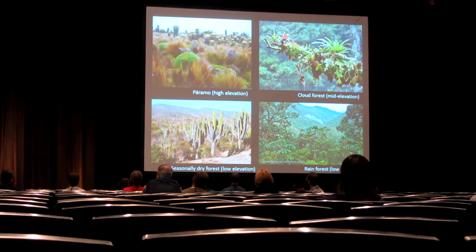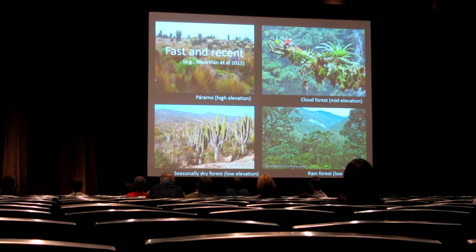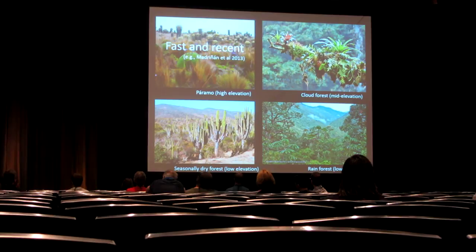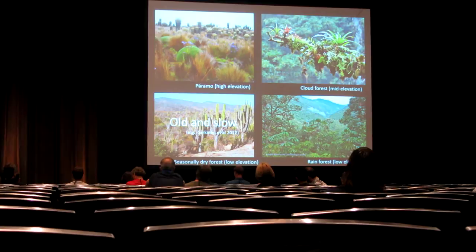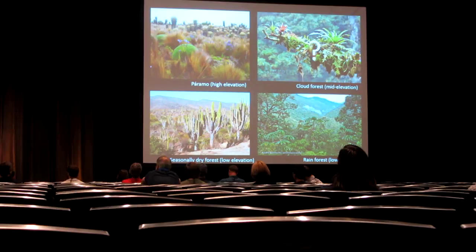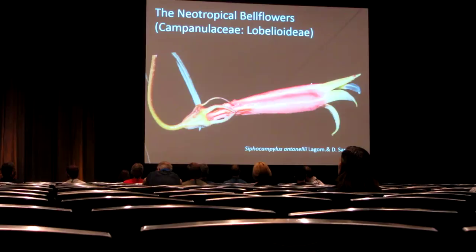As a community, we're beginning to understand patterns about Andean diversification. We know, for example, that the Paramos are the world's fastest and most recent biodiversity hotspot, with most diversification happening in the Pleistocene. On the other hand, we know that seasonally dry forests in the Andes are relatively slow-evolving and old, with most diversification happening in the mid-Miocene. But despite the fact that Andean cloud forests harbor many more species than the other regions, we know fairly little about their diversification dynamics.